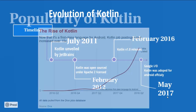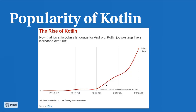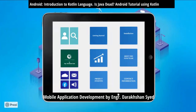After 2016 there was a gradual rise in Kotlin's popularity, but when Google promoted it in 2017, jobs for Kotlin developers grew significantly and developers with Kotlin skills started getting hired quickly. This job data is taken from the Dice jobs database.